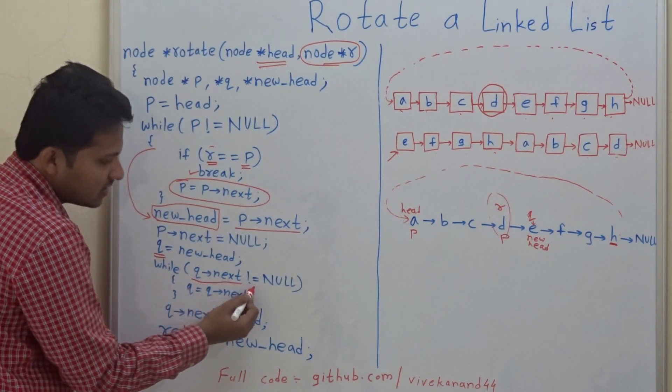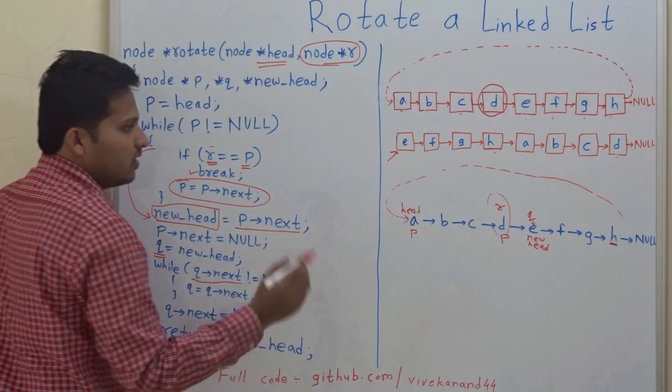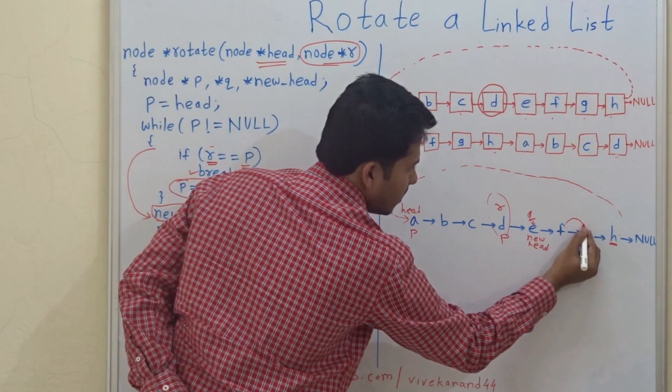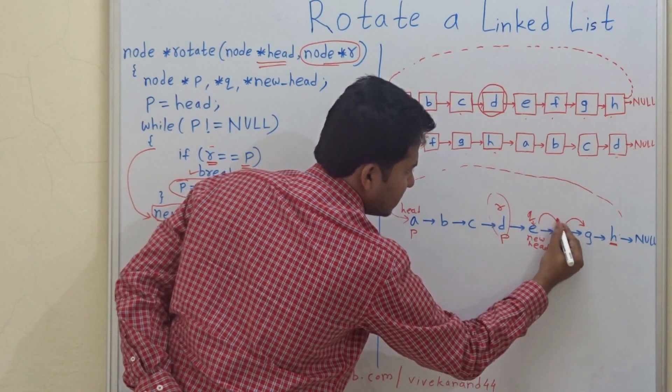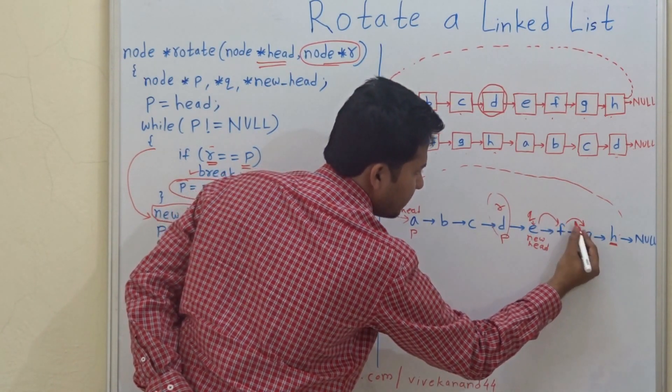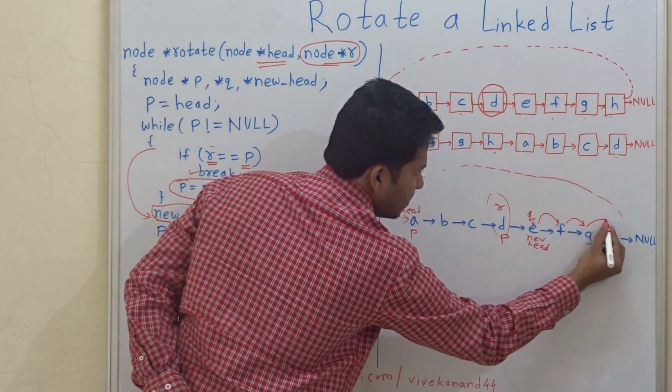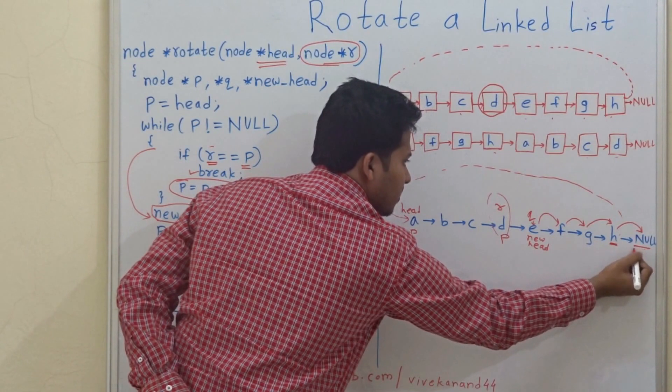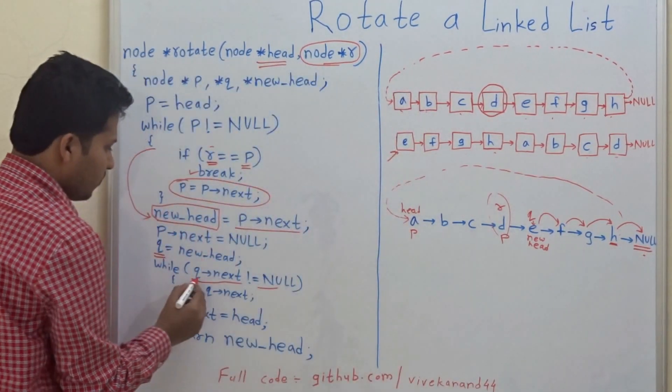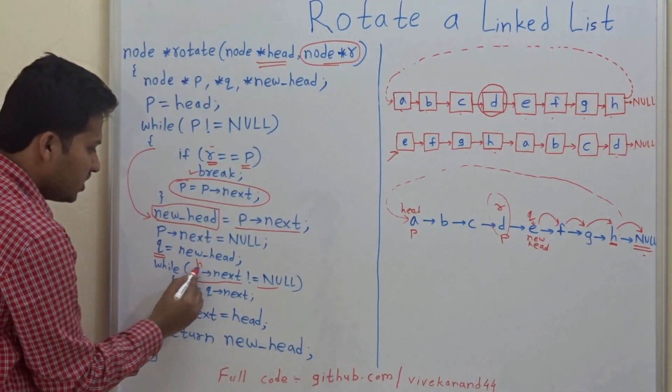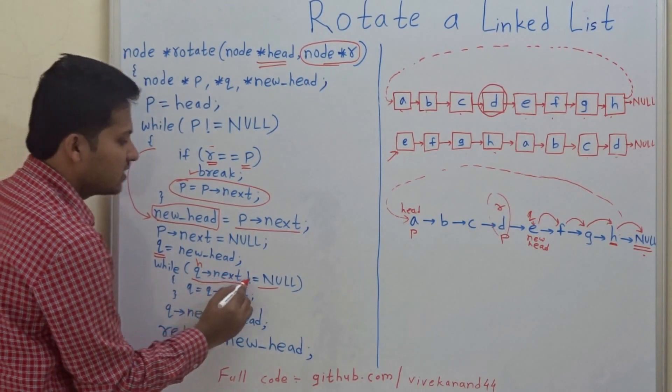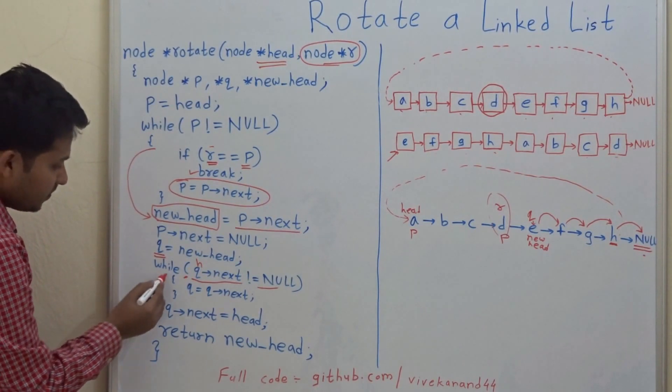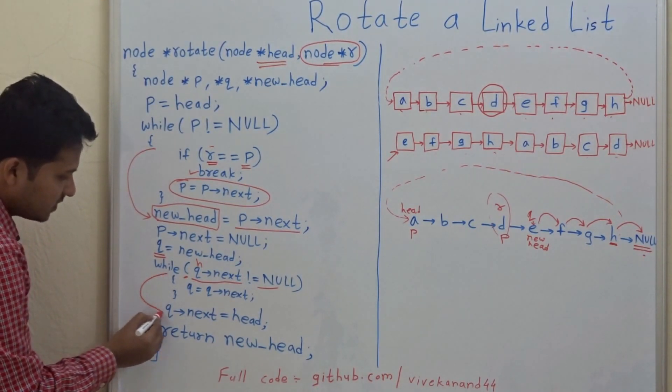While Q.next is not equal to null, till H the node next. E next is F, F next is G, G next is H. But next of H is null. So when it comes to H, H.next is null, so this condition will fail and we will come out of this while loop.